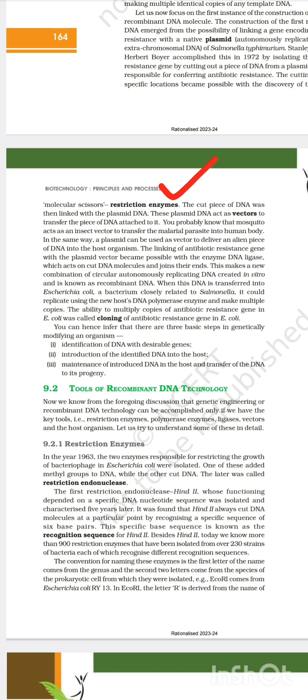Restriction enzymes are of two types: exonuclease and endonuclease. Exonuclease cleaves DNA from a terminal position, whereas endonuclease cleaves DNA from any point in the middle — not at the terminal position. The cut piece of DNA is then linked with the plasmid DNA, which acts as a vector. Just as a mosquito acts as a vector to transfer the malarial parasite into the human body, plasmid is used as a vector to deliver an alien piece of DNA into the host organism.